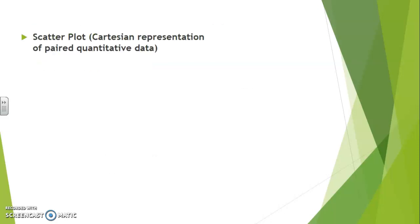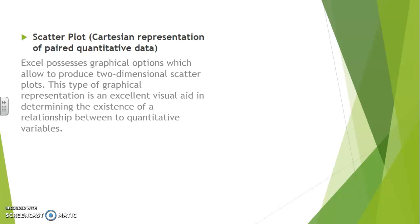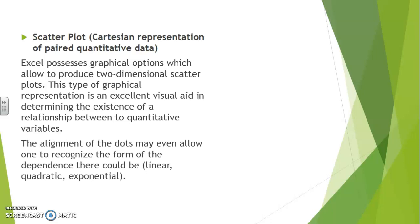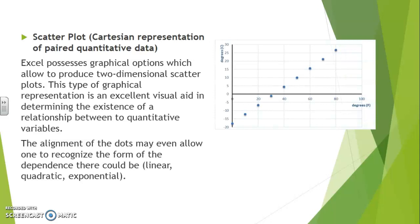In a scatter plot, we get to visualize the representation for paired quantitative data. Excel possesses graphical options which allow you to produce two-dimensional scatter plots. This type of graphical representation is an excellent visual way of determining the existence of a relationship between two quantitative variables. The alignment of the dots may even allow one to recognize the form of the dependence — be it linear, quadratic, or exponential.